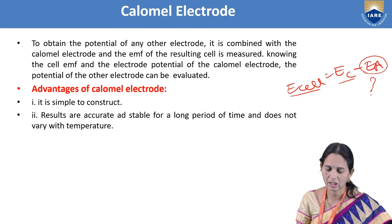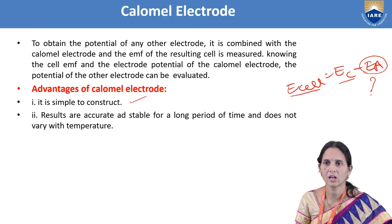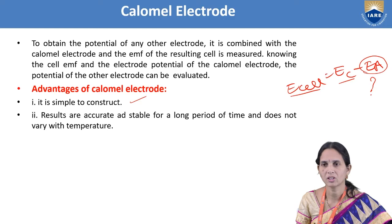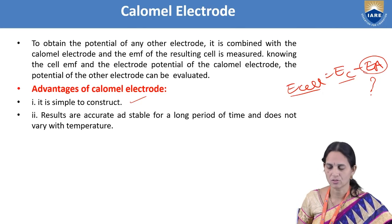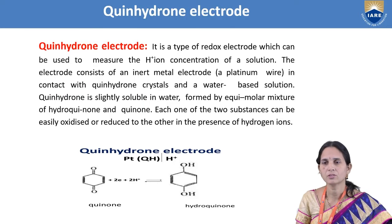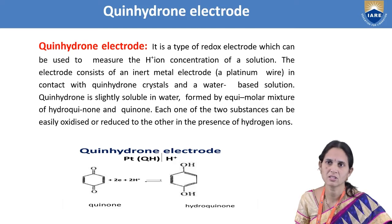Advantages of the calomel electrode: it is simple to construct, results are accurate and stable for a long period of time, and it does not change with temperature.